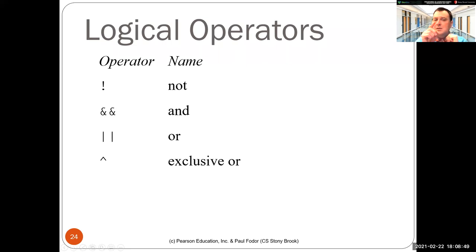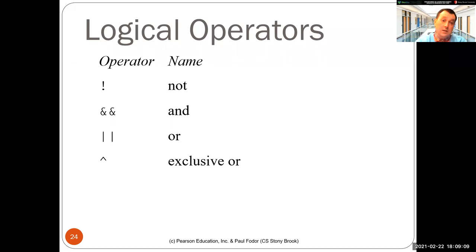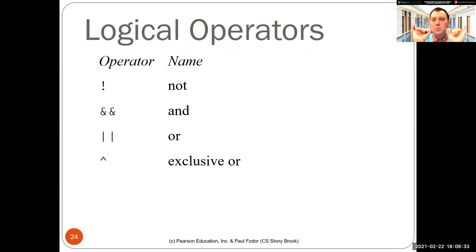However, sometimes we have side effects in the operators, like the pre-increment or post-increment operators. It's not always the case that if the first operand is false you would want to skip the second operand. There are two conjunction operators in Java: the double one, also called the shortcut or conditional operator, and the single ampersand, called the unconditional operator, meaning both operands will be executed no matter what the first operand is — true or false.